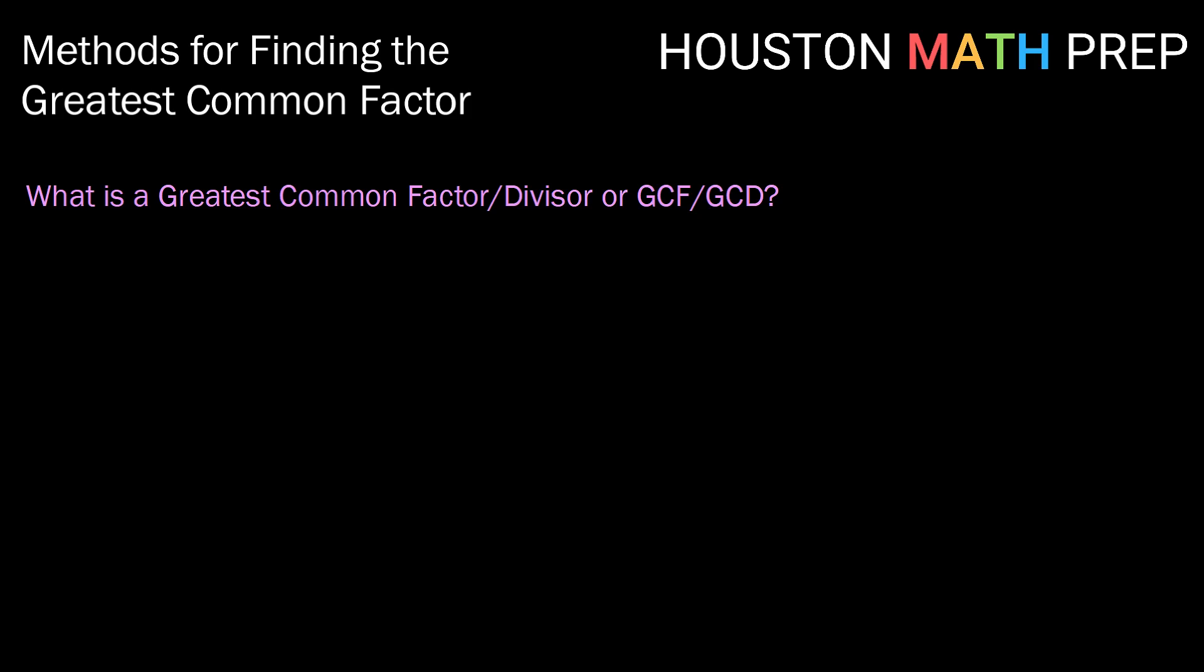So let's start with answering the question, what is the greatest common factor or divisor? We tend to abbreviate that as GCF or GCD, and I want to point out that they're exactly the same thing because factor and divisor mean the same thing. So we're going to use the terms and the abbreviations interchangeably here.